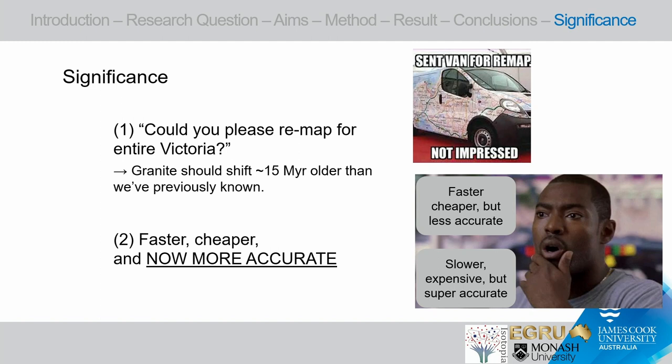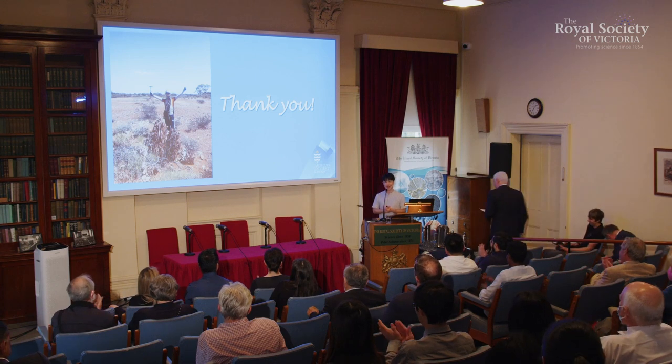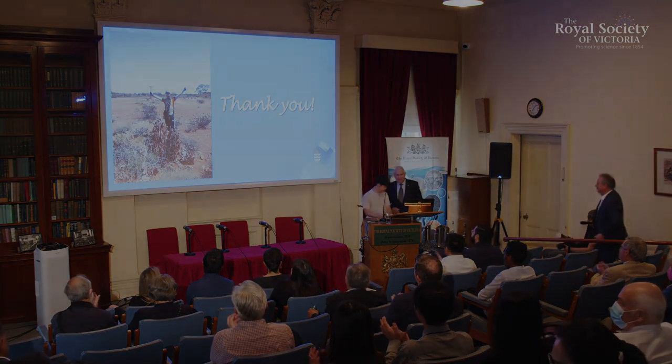There's one more important point. There are actually a couple of ways for age dating, but they follow a trade-off relationship: the faster, cheaper method is less accurate, and the slow, expensive one has more accuracy. But with this trace element filtering and monitoring technique, I would say it is now faster, cheaper, and even more accurate. Thank you for listening — any questions or comments are welcome.